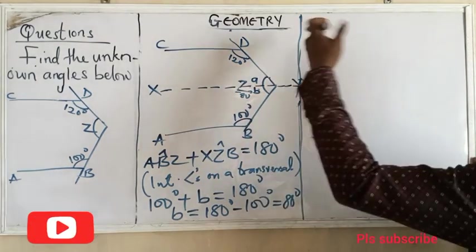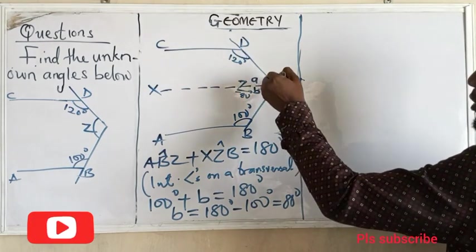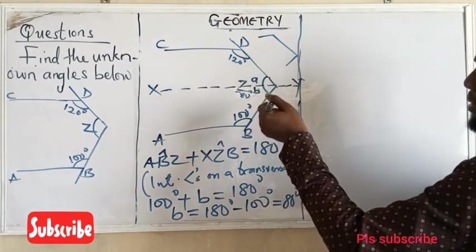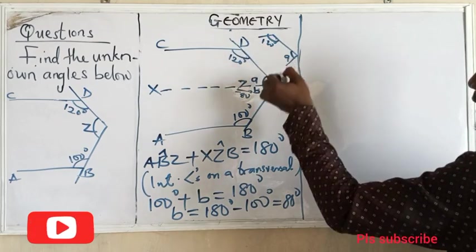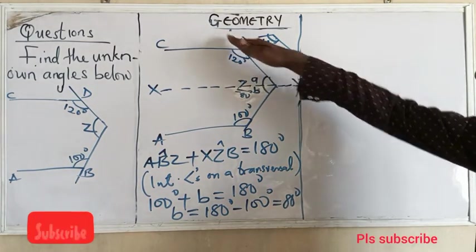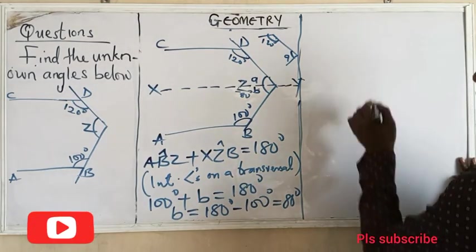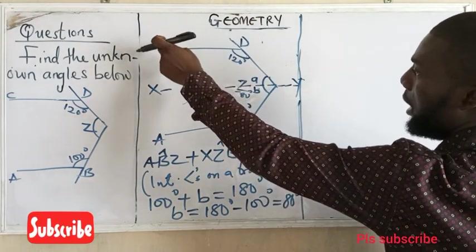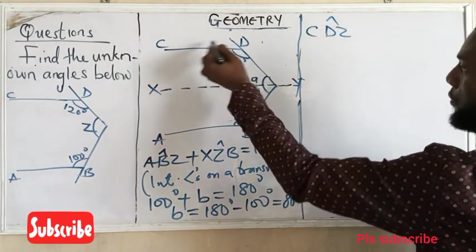Now let's do the other side. As you can see, this is 120 degrees and this is letter A. They both lie on the transversal. If you observe, it gives us something like a letter C — it's enclosed on both sides. So this is 120 degrees and this is letter A. We are dealing with interior angles on a transversal. Angle CDZ plus angle XZD equals 180 degrees — interior angles on a transversal.